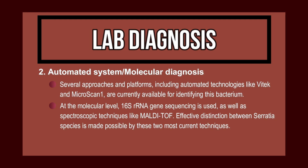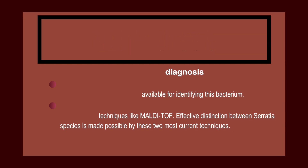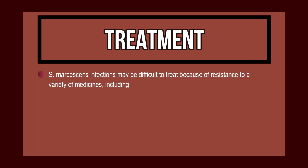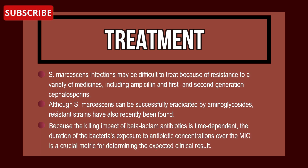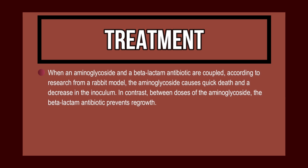Treatment of Serratia marcescens: infections may be difficult to treat because of resistance to a variety of medicines including ampicillin and first- and second-generation cephalosporins. Although aminoglycosides can successfully eradicate Serratia marcescens, resistant strains have recently been found. When an aminoglycoside and a beta-lactam antibiotic are coupled, the aminoglycoside causes rapid bacterial death and decrease in inoculum, while between doses, the beta-lactam antibiotic prevents regrowth.